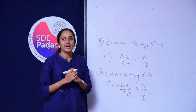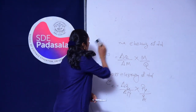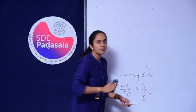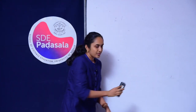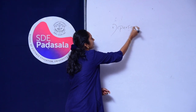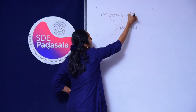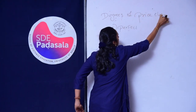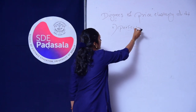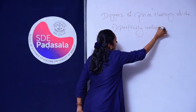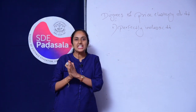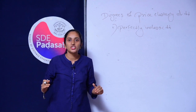As I said, we will be focusing on Price Elasticity of Demand. Let us see what are the degrees of Price Elasticity of Demand. There are five degrees of Price Elasticity of Demand. The first one is Perfectly Inelastic Demand. Demand for a commodity is said to be perfectly inelastic when, to a percentage change in price, there is no change in quantity demanded.